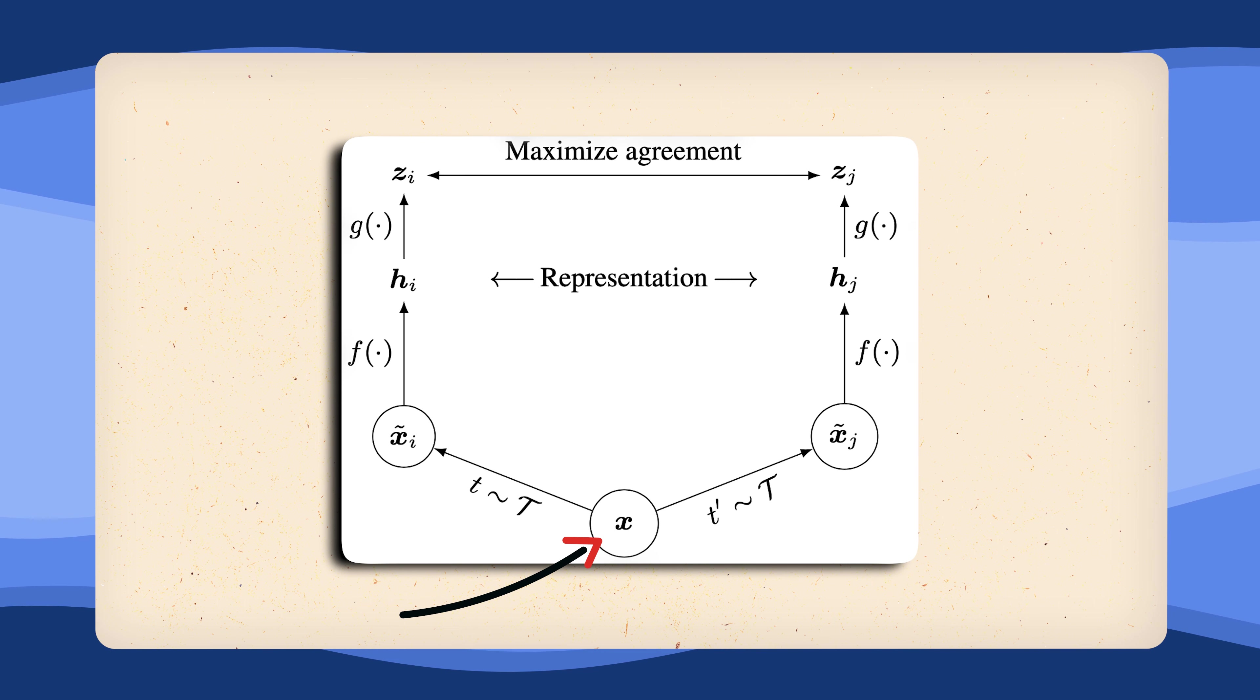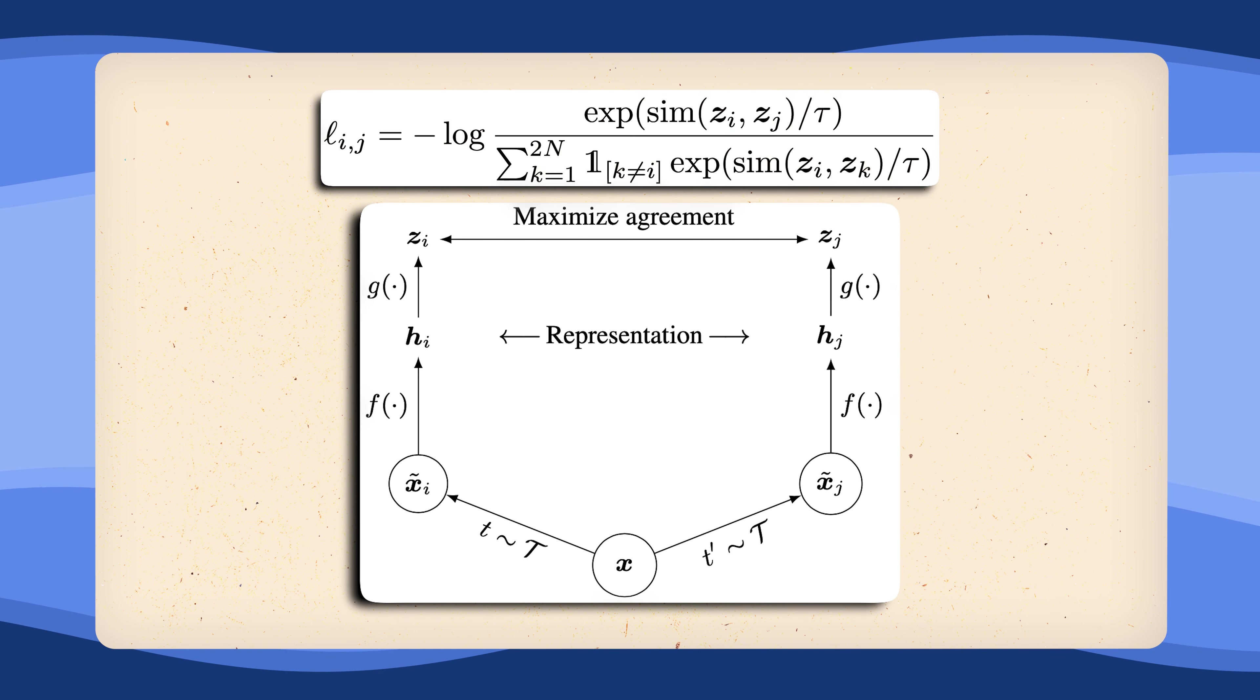We have our original image x. We now apply two different sets of random augmentations t and t prime to get the two different views, x-tilde i and x-tilde j. We now pass them through the same neural network to get our hidden representations and eventually maximize the agreement between the two embedding vectors. Maximizing the agreement here simply means we minimize our contrastive loss.